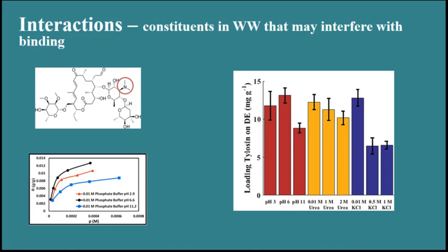The second factor looked at was the addition of urea, which also interacted with a bunch of binding sites — as urea increased, binding decreased. The final point was to look at potassium, which is a highly charged ion that also interfered with binding sites, causing a significant decrease in binding when potassium was added. It was really important to understand all these binding characteristics to figure out how best to pursue the remainder of the project.